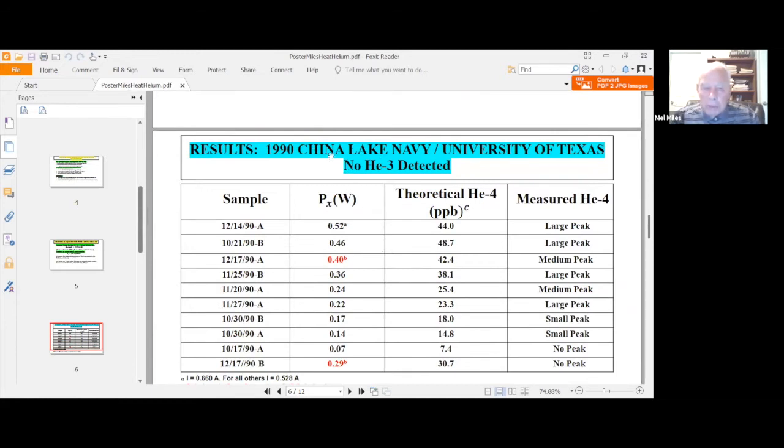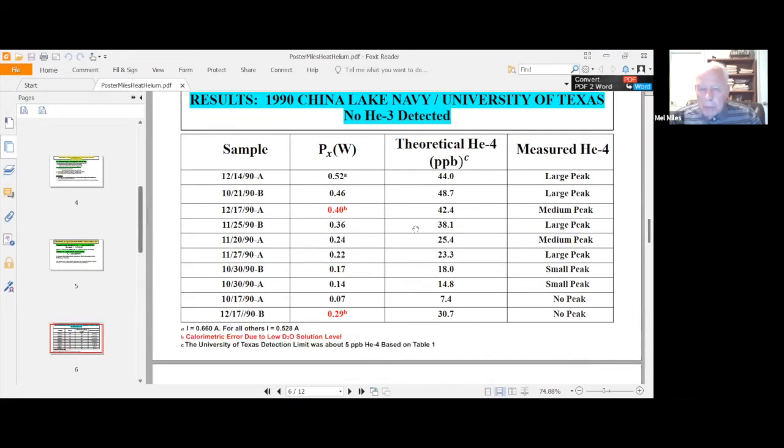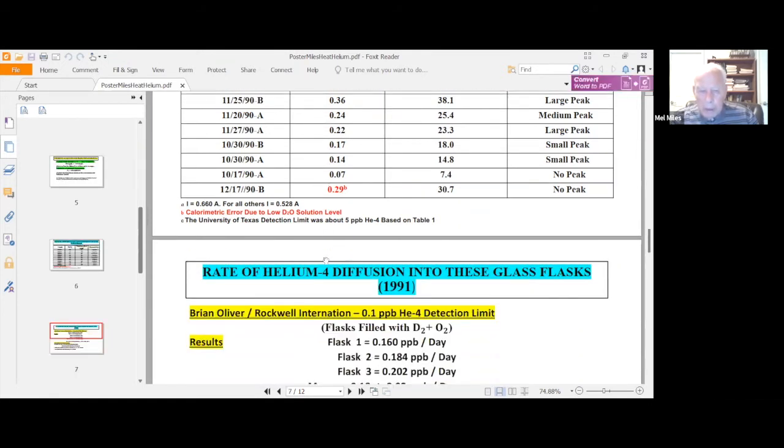These are the results of that 1990 experiment. And using the previous theoretical equation, we now can note here on this column the parts per billion of helium-4. And these are the experimental excess power that we measured. Ben Bush did not report it in terms of the amount of helium-4, but he mentioned on the mass spec, it'd be a large peak, a medium peak, or a small peak, or no peak. And you see they pretty well matched up. A few exceptions, the red ones are ones where we had a rather large calorimetric error because the electrolyte level got too low, and you could have recombination going on exposed metal surfaces. So those probably ought to be dismissed. But other than that, it fits quite well.